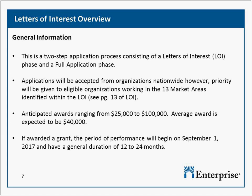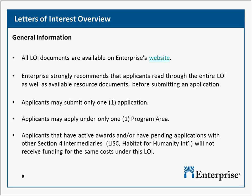Some general information about the letters of interest funding opportunity. It's a two-step application process consisting of a letters of interest phase, which we're in right now, and then a full application phase. We're accepting applications from organizations nationwide. However, priority will be given to eligible organizations working in the 13 market areas identified in the LOI on page 13. Our anticipated awards range from $25,000 to $100,000, with the average award expected to be around $40,000. If you receive a grant, the period of performance will begin on September 1st, 2017, and will have a general duration of 12 to 24 months. All documentation needed to submit your application is available on our website. We recommend that applicants read through the entire LOI as well as the available resource documents before submitting an application.